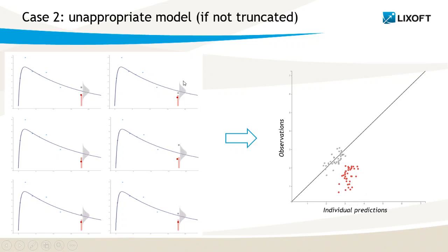On the opposite, if I would not truncate the distribution from which I sampled the residual error, I would end up in a case like this, where the simulated BLQ is sometimes above, sometimes below the prediction, leading to a cloud of dots on the black line in the obs versus pred. And in that case, I would not be able to identify the model misspecification. So it is really important to truncate the distribution.